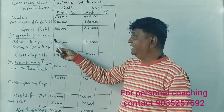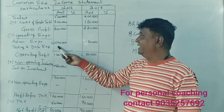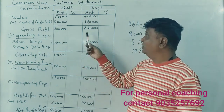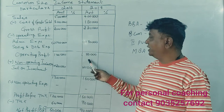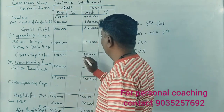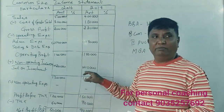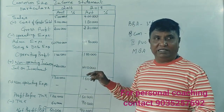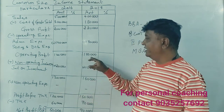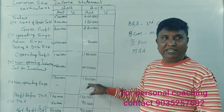For administration and selling expenses: 1 lakh 70 thousand minus 2 lakhs gives 1 lakh, and 2 lakh 20 minus 70 thousand equals 1 lakh 50 thousand. Next, for non-operating income, we add other income: 1 lakh plus 20 thousand equals 1 lakh 20 thousand, and 1 lakh 50 plus 10 thousand equals 1 lakh 60 thousand.